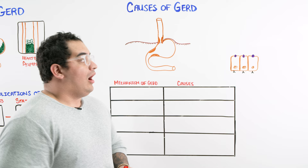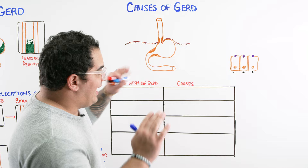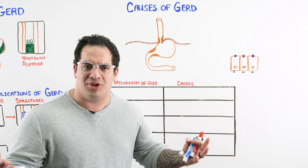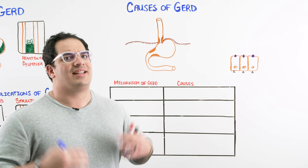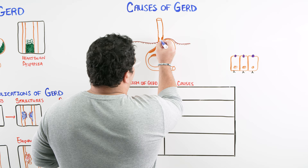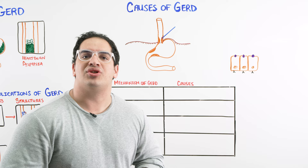We know GERD causes heartburn and dyspepsia from reflux of hydrochloric acid, with complications including esophagitis, strictures, aspiration, GI bleeds, and esophageal cancer. The key question is: why is the hydrochloric acid going up into the esophagus? There are four particular reasons.